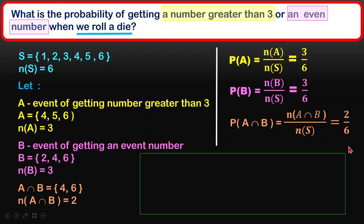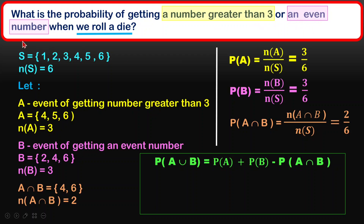We will now calculate the probability of getting a number greater than 3 or an even number. Using the formula, we take P(A) + P(B) - P(A∩B), put in the details we have, and calculate the probability.